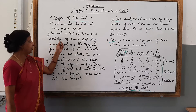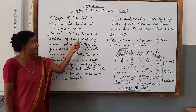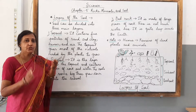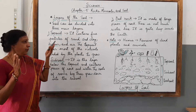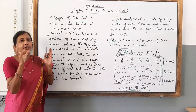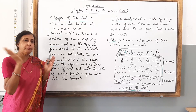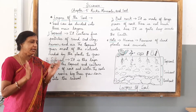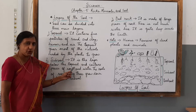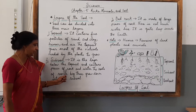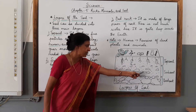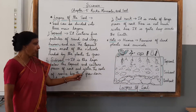Topsoil contains fine particles of sand and clay, humus and air. The roots of plants absorb nutrients from the topsoil, which is helpful for their growth. In the subsoil, it is the layer below the topsoil and contains pieces of rock and water.